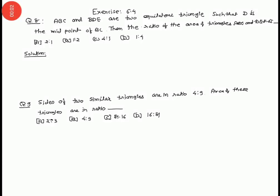Now we start exercise 6.4, question number 8. ABC and BDE are two equilateral triangles such that D is the midpoint of BC. Then the ratio of area of triangle ABC and BDE is this.